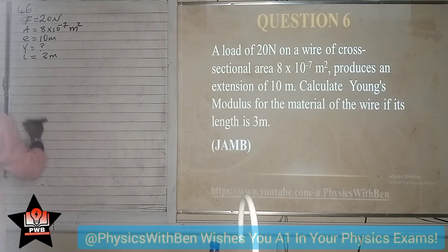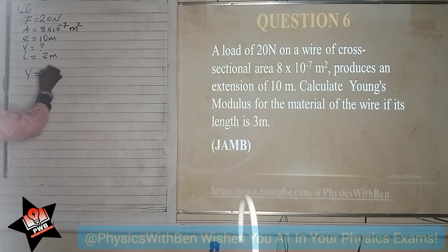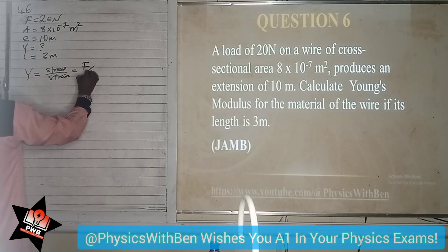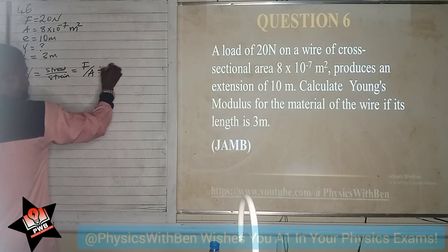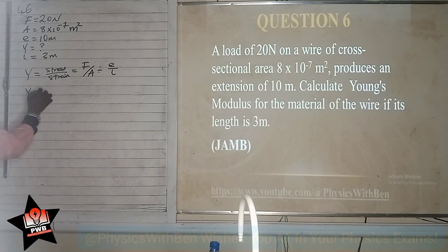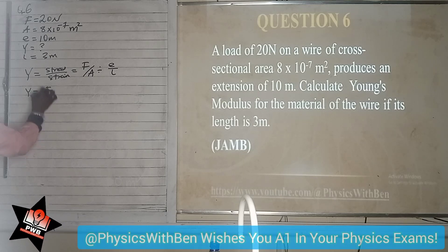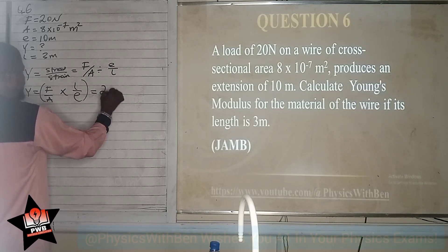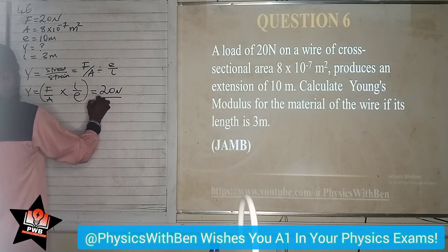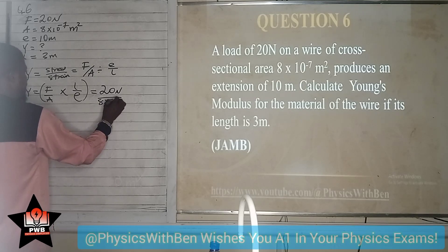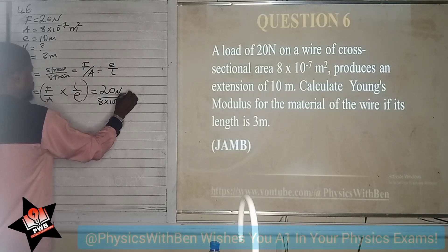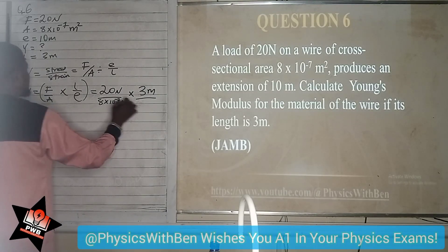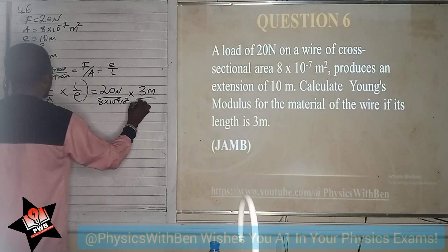So the next thing is to write the correct equation. From Young's modulus, Y equals stress over strain. This is the same as force divided by area, divided by extension over original length. So the Young's modulus is given to be force over area, times L over E. At this point we substitute: we have 20 divided by 8×10⁻⁷ metres squared, times length 3 metres, all over 10.